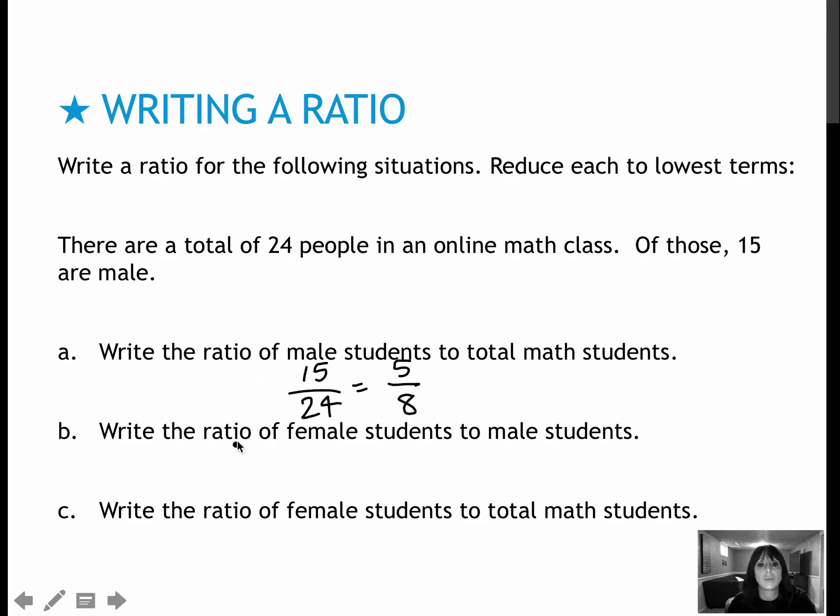For the next one, it asks us to write the ratio of female students to male students. If there are 24 total and 15 are male, I will assume that 9 are female. And if that is the case, female students to male students would be 9 to 15. Reducing by 3 would give me 3 to 5. And the ratio of female to total, I can do 9 over 24 and reduce to 3 over 8, or I could have looked at the fact that there were 5 over 8 that were male, which means the remaining 3 over 8 should be those female math students.